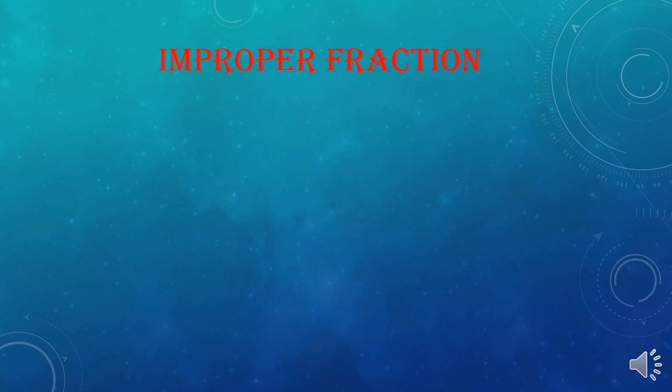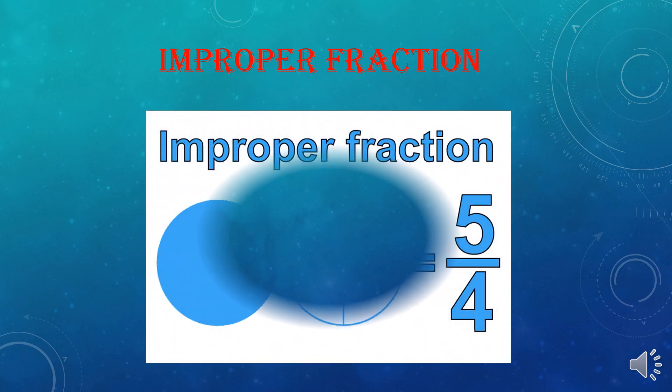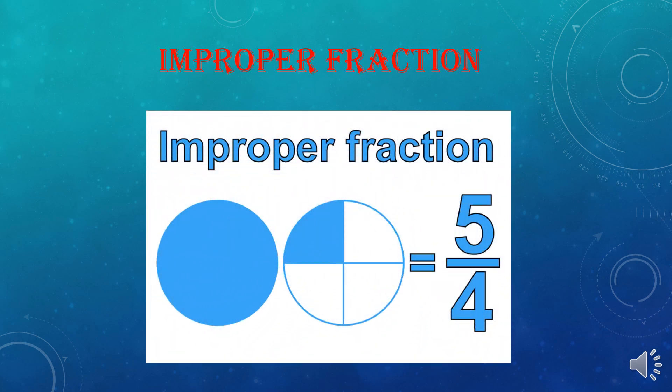Improper Fraction is just like the reverse of Proper Fraction. Here, the numerator should be larger and the denominator should be smaller. An Improper Fraction is a fraction having a larger numerator than the denominator — as you can see on screen, 5 is the numerator and it's bigger than the denominator. So they are both reverse of each other.